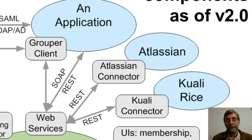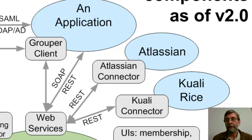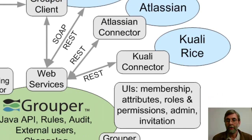Those web services are also wrapped in something called the Grouper Client, which is a single Java jar to make it really easy to extend a Java application with Grouper's capabilities and general access management capabilities. The Grouper Client has been extended in special ways to support Atlassian applications like JIRA and Confluence, and also Kuali applications like Kuali Financials and Kuali Rice.